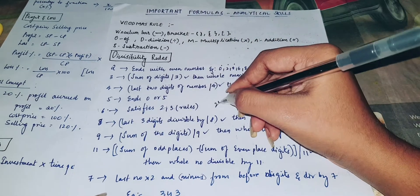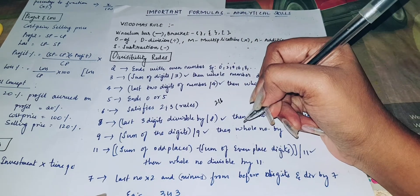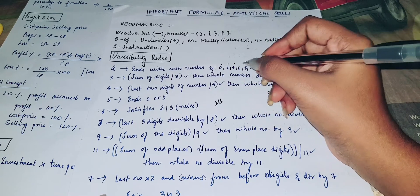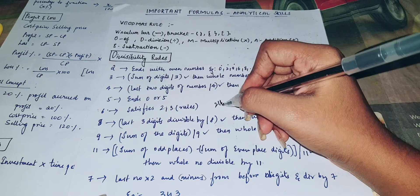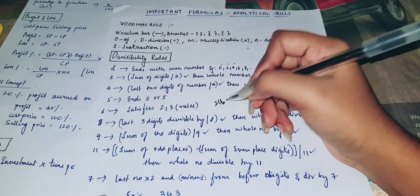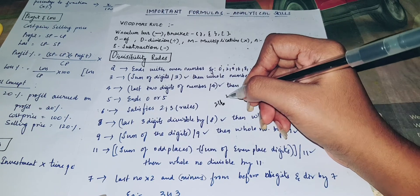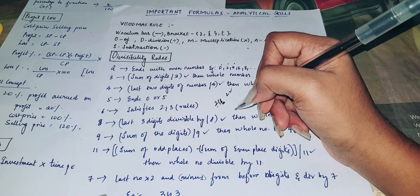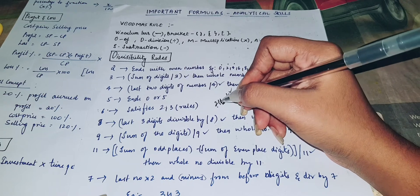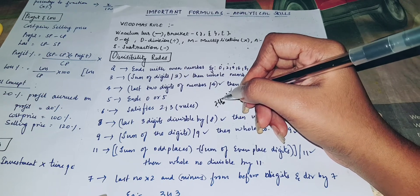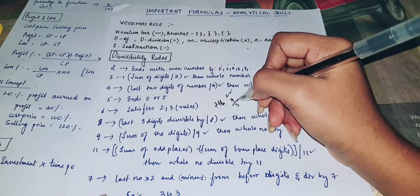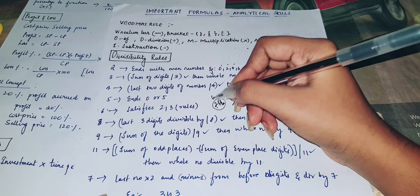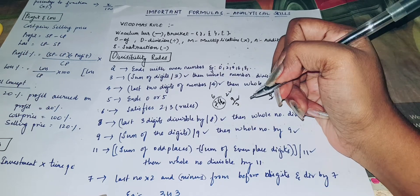For example, 216: the end digit is even, so 2 is satisfied. For rule of 3, the sum of the digits is 2 plus 1 is 3, plus 6 is 9. 9 divided by 3 — so 216 is divisible by 6.